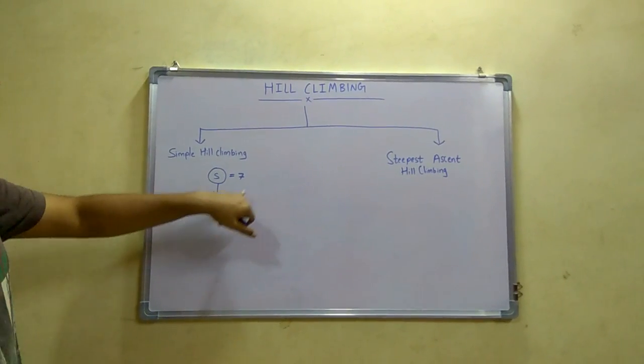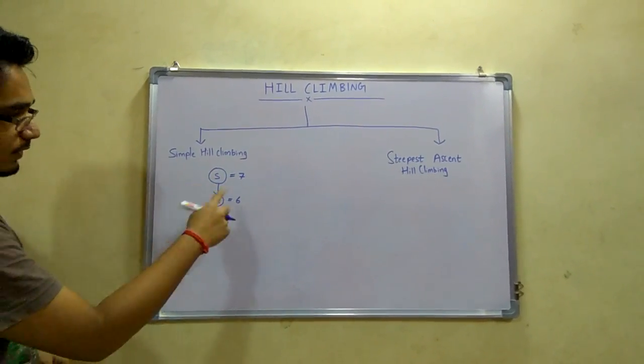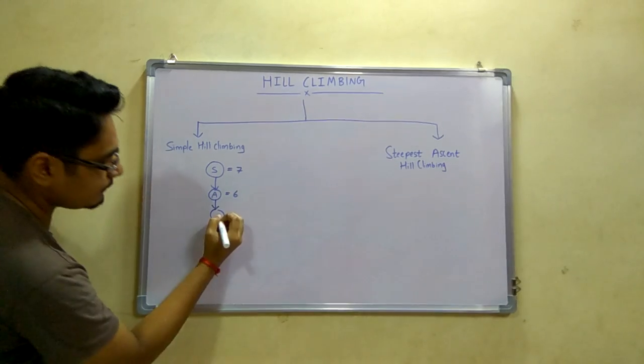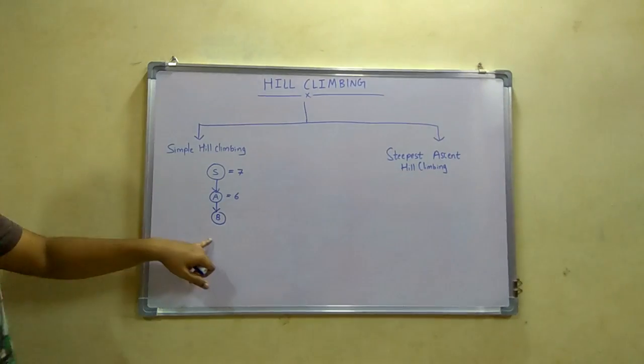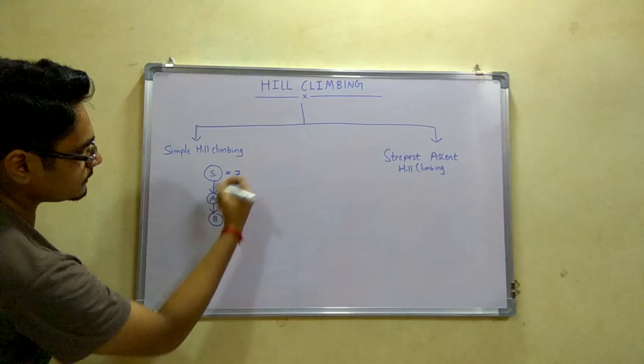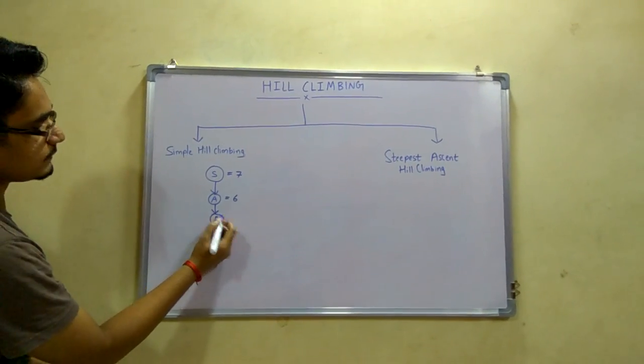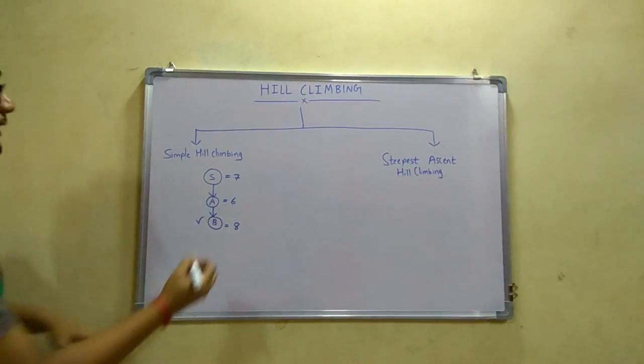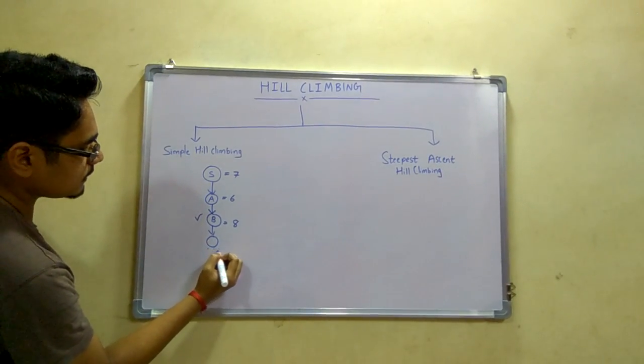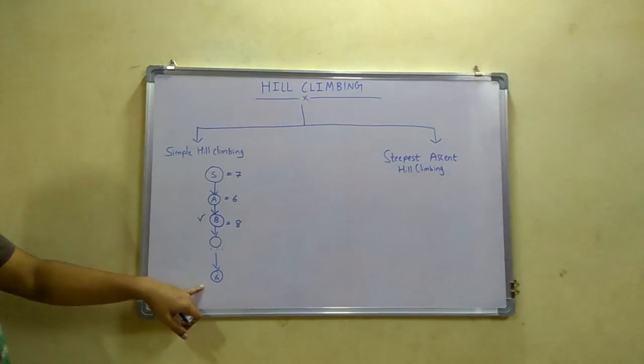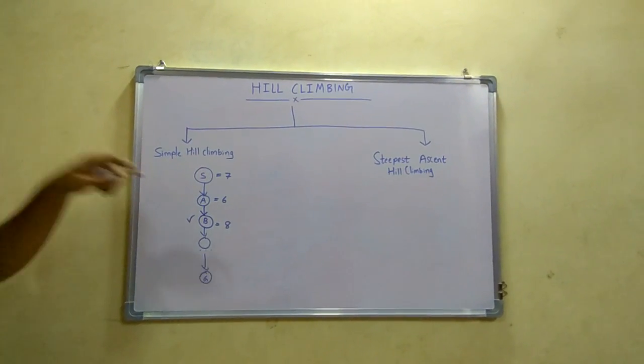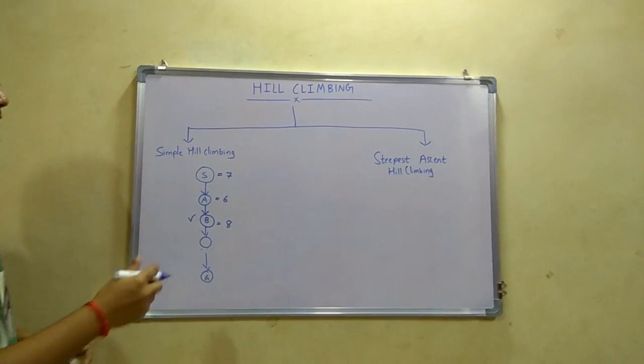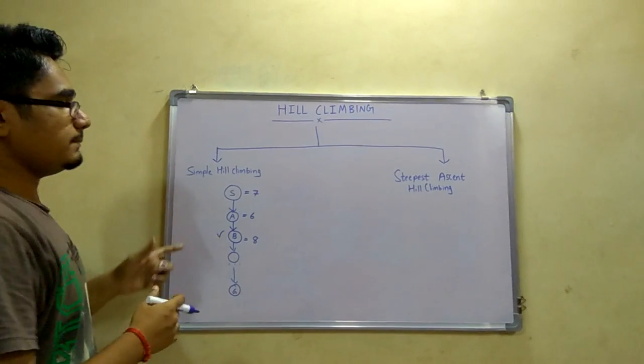Then we check if this successor is better than the current state. If not, we generate one more successor of this state, that is B, and check whether it's heuristically better. If this value comes out to be 8, we accept it and continue searching until the goal node is reached. As you can see, simple hill climbing is time complicated, so we don't prefer this approach.